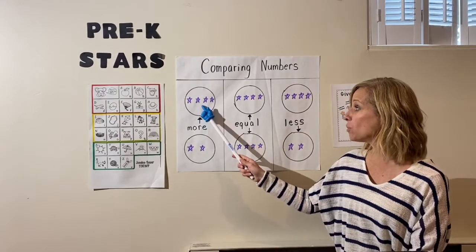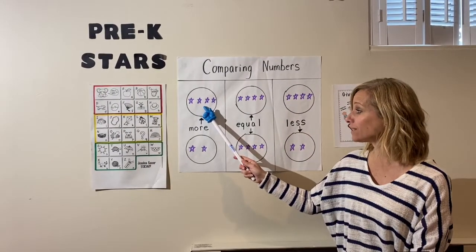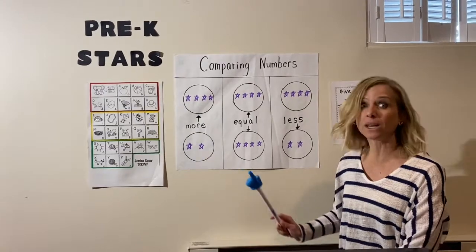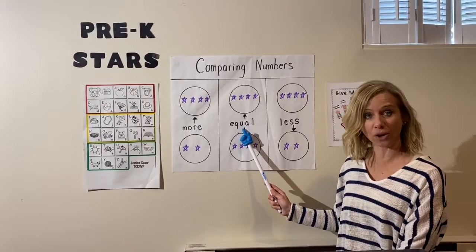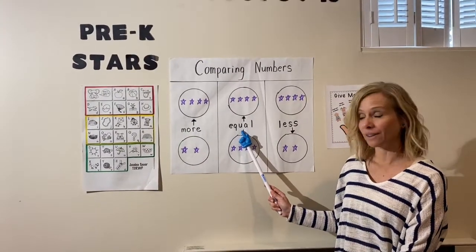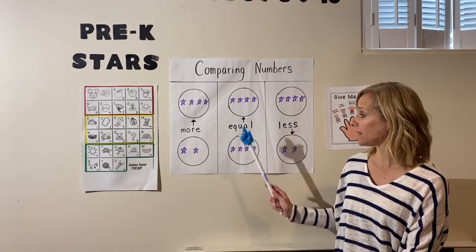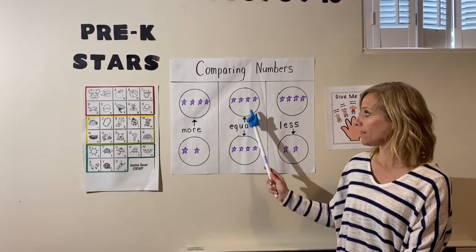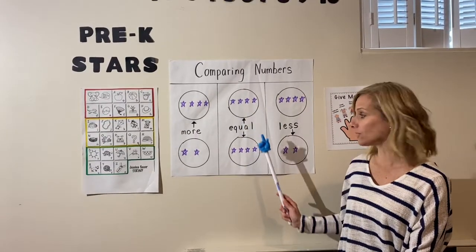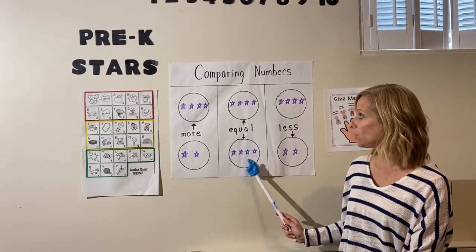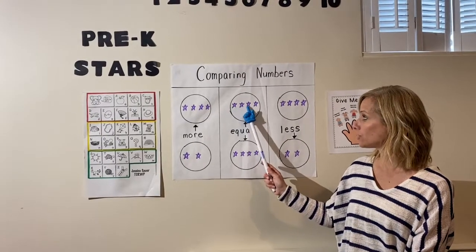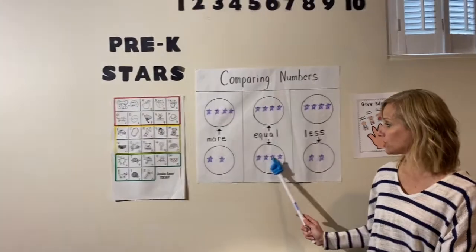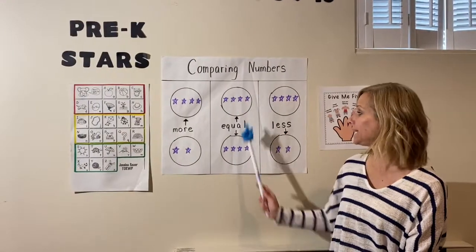There are more stars in this group than in this group. We're also going to be using the word 'equal.' If you look at the stars in this group and the stars in this group, they're the same amount — they're an equal amount. There are four stars in this group and four stars in that group. They are equal, the same.